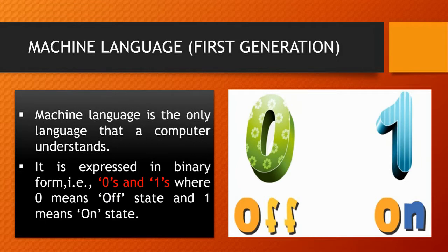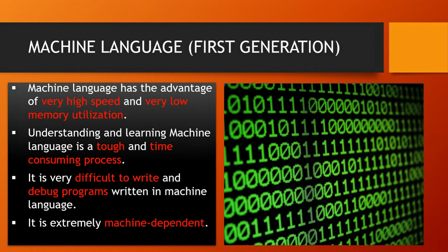The computer can easily understand this language, but we can't understand it. At that time, we used to write programs in this language only. It has the advantage of very high speed and very low memory utilization. If we write programs using the same language which is understandable to the computer, execution will be at very high speed and it takes very low memory. The problem is that it is very tough to learn and a very time-consuming process. It is very difficult to write and debug programs in machine language. It is also a machine-dependent language.